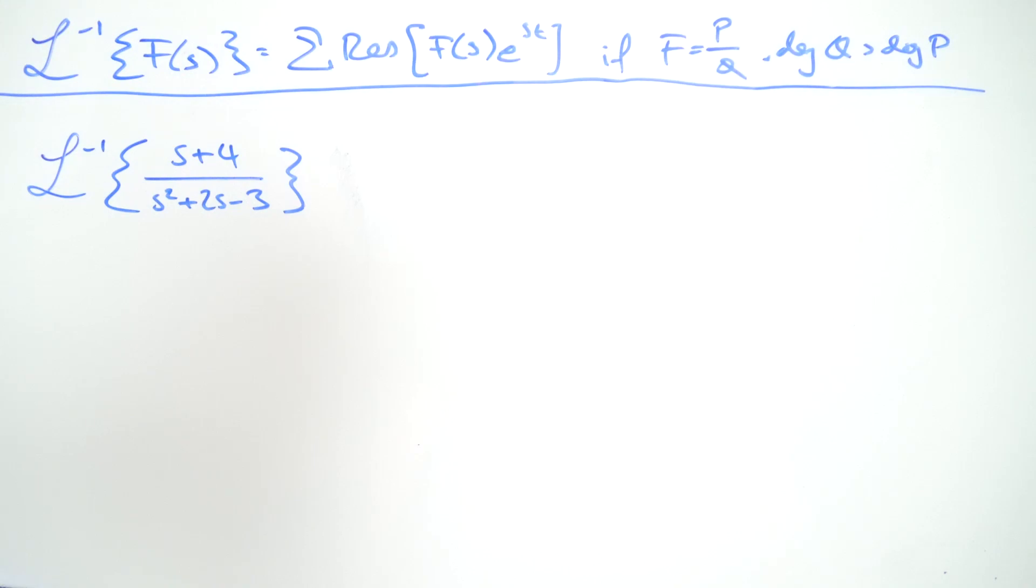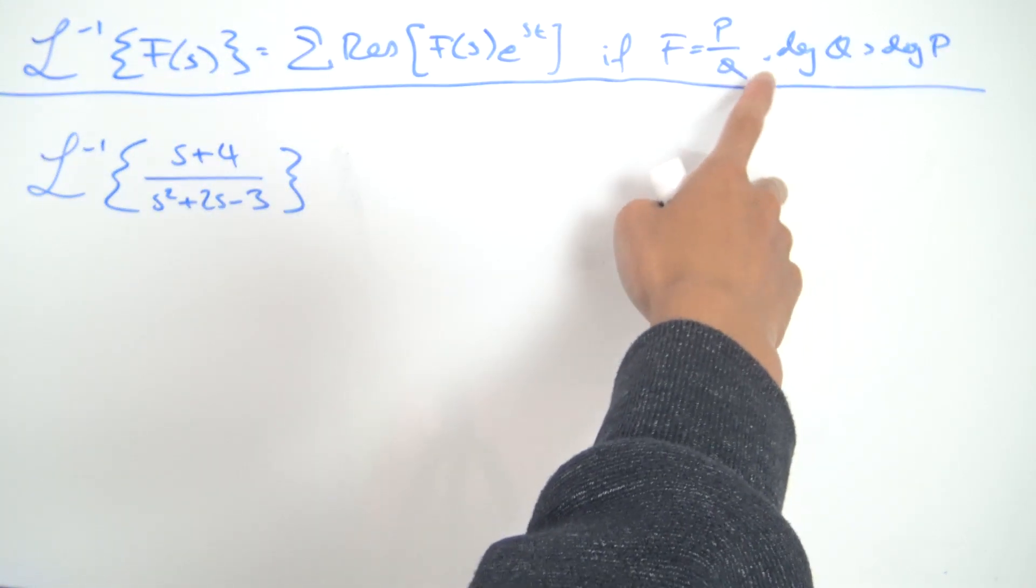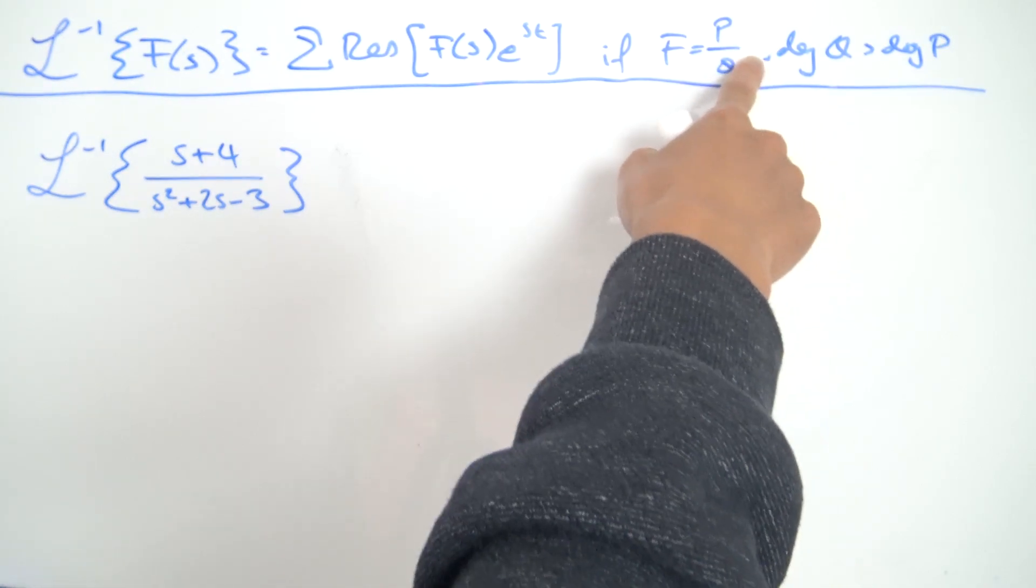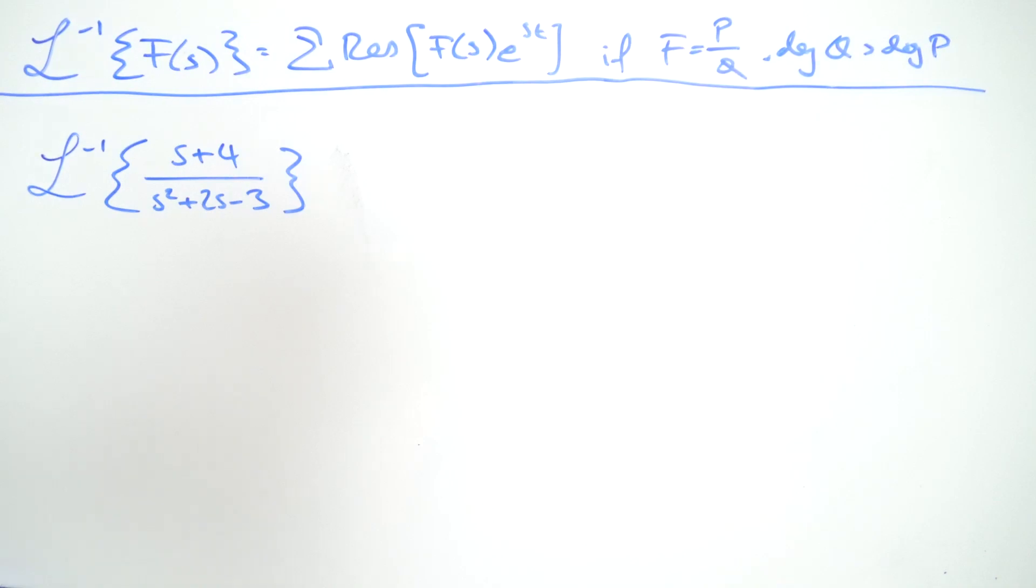So in a previous video I've shown that this formula is true when f(s) can be expressed in terms of the quotient of two polynomials with the degree of the denominator being greater than the degree of the numerator.